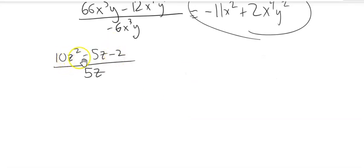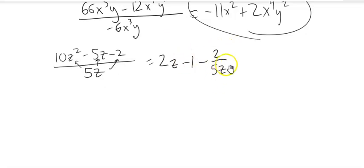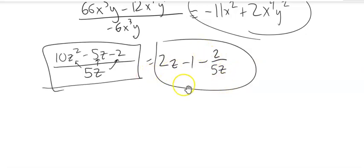Now with three terms — a trinomial in the numerator — each piece is divided by 5z. 10z² divided by 5z: 10 divided by 5 is 2, z² divided by z is z, giving 2z. Minus 5z divided by 5z is 1. Minus 2 divided by 5z — I can't simplify that anymore, so I leave it as 2/(5z). Fractions are division left undone; that's as far as we can go. So the answer is 2z − 1 − 2/(5z).